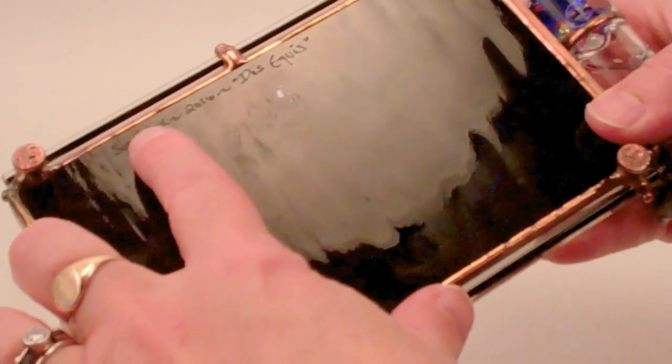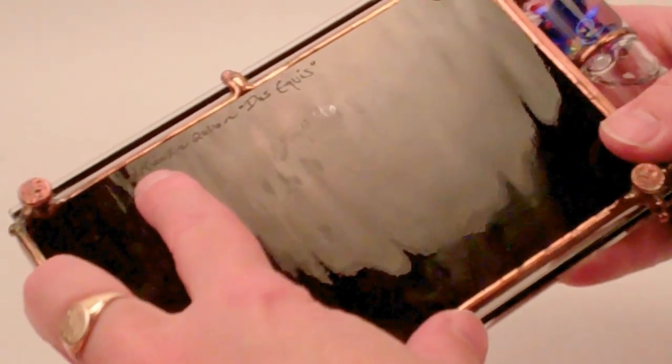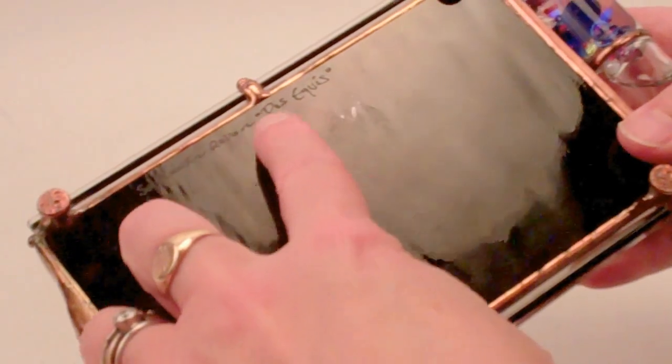Sue has signed it by etching directly into the black glass on the bottom, Sue Rio 2016 Dos Equis.